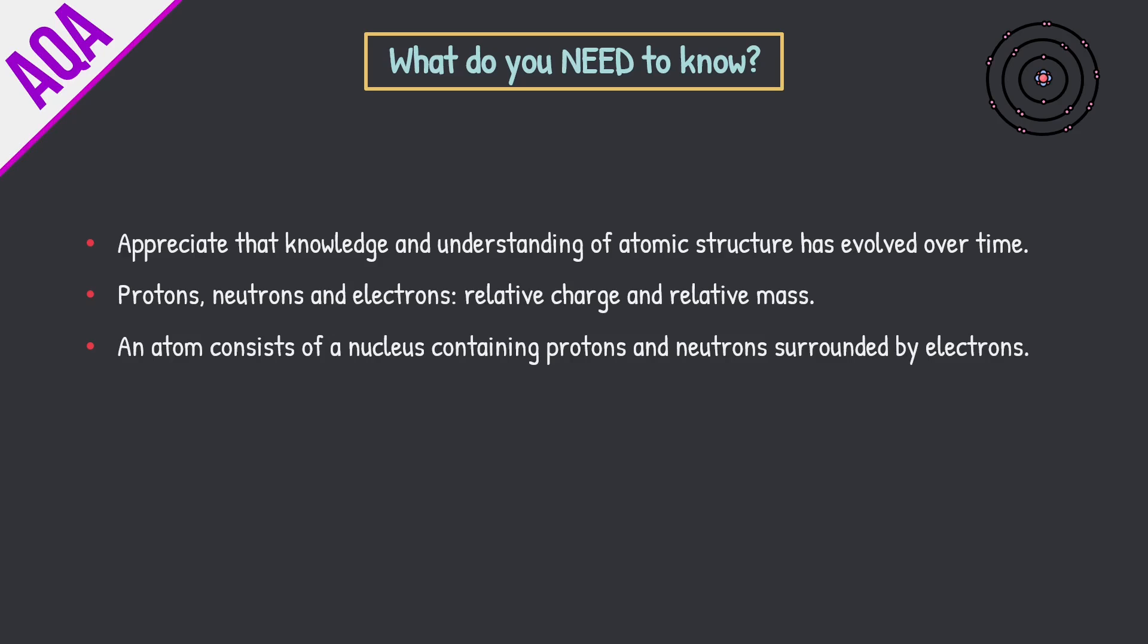Now you need to be able to appreciate that knowledge and understanding of atomic structure has evolved over time. Models of the atom. You also need to know about protons, neutrons and electrons, real basic GCSE stuff guys. And you need to know about their relative charge and relative mass and you need to be able to say the respective charge and mass of each subatomic particle. You also need to know that an atom consists of a nucleus containing protons and neutrons surrounded by electrons. So hopefully this is a real quick video, basically a GCSE recap with a little bit more information. So let's jump into this.